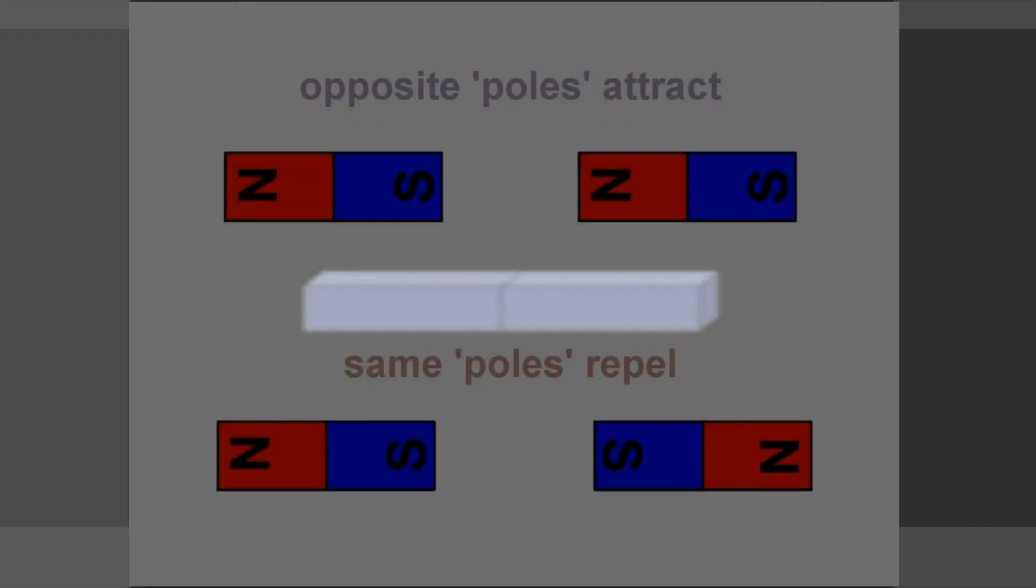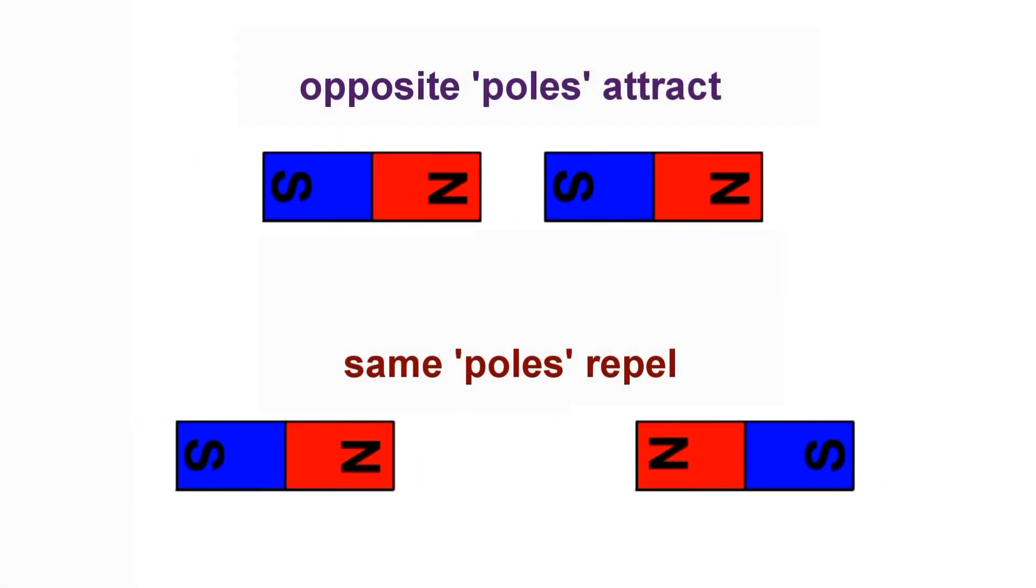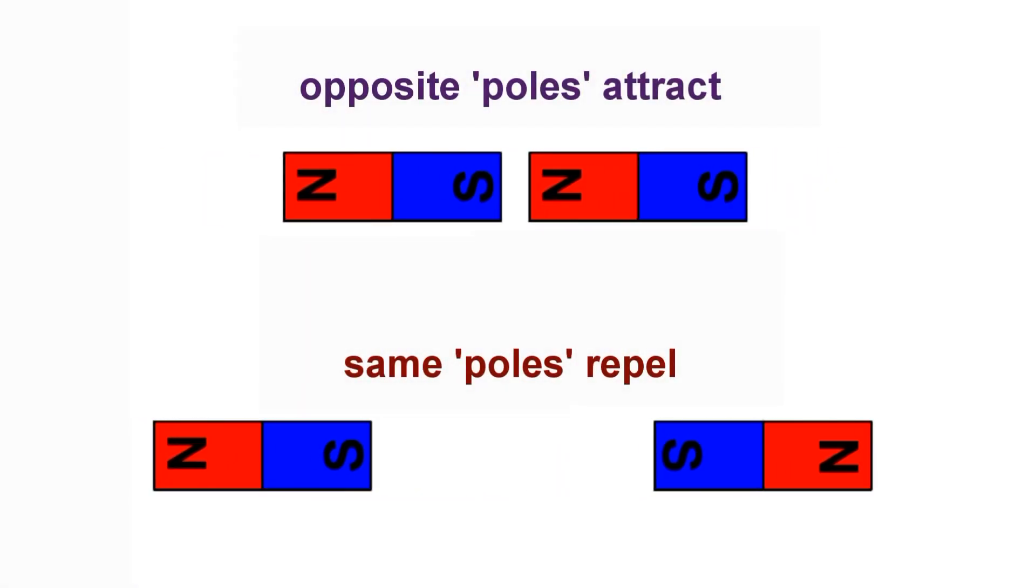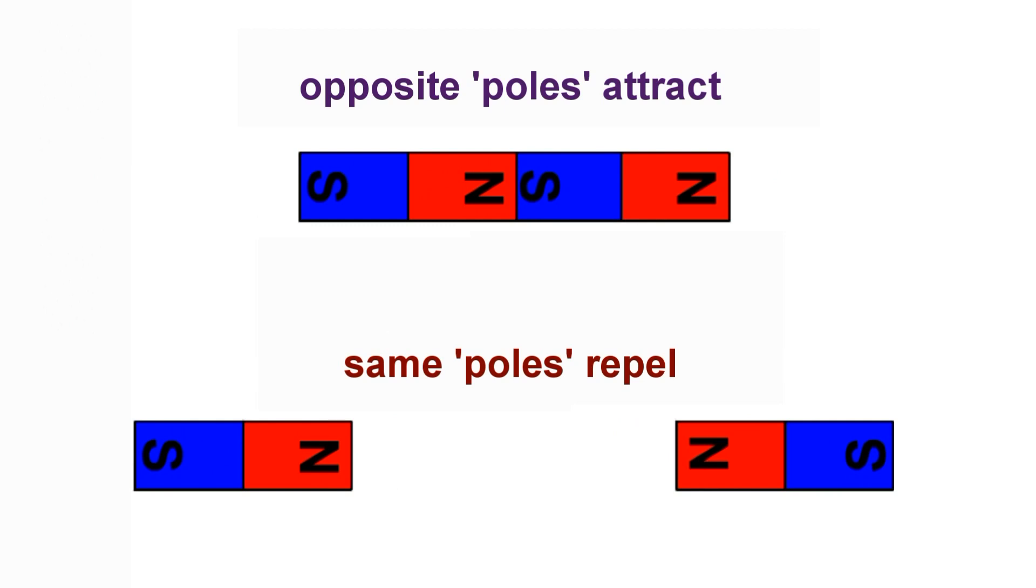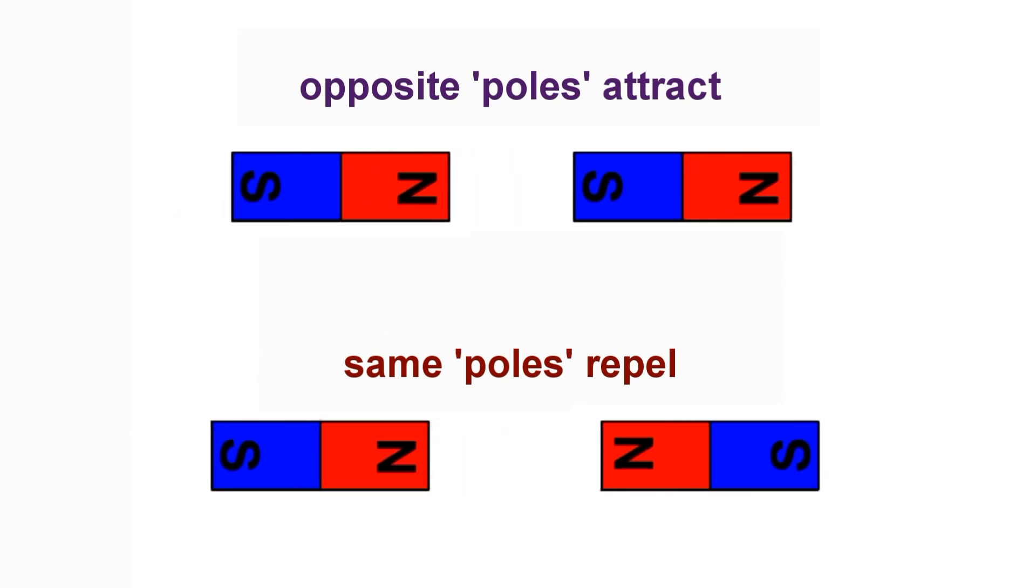If you place a typical bar magnet close to another, they will attract or repel each other depending on which way their poles are facing. The worldly wisdom is that north attracts south and same poles repel. But this is merely a description. What is physically happening at these ends?